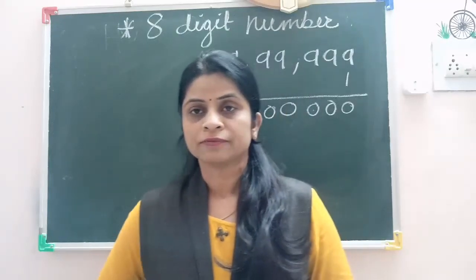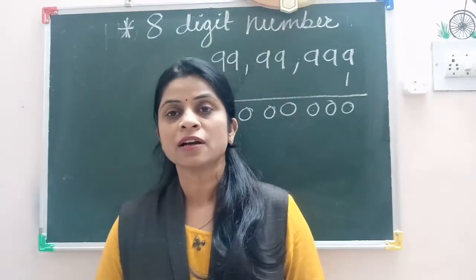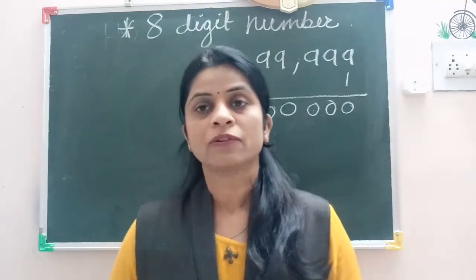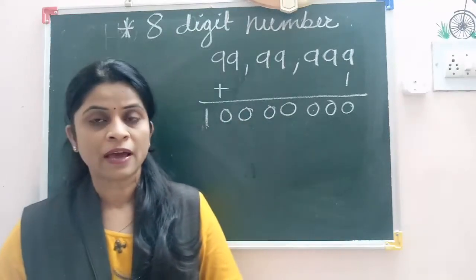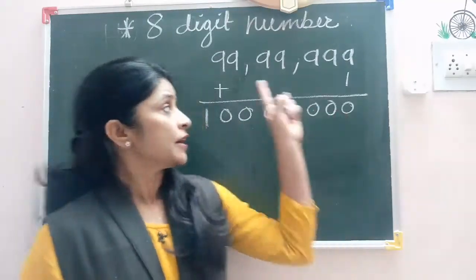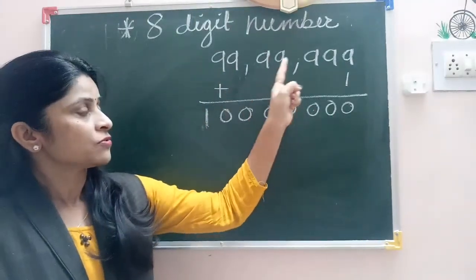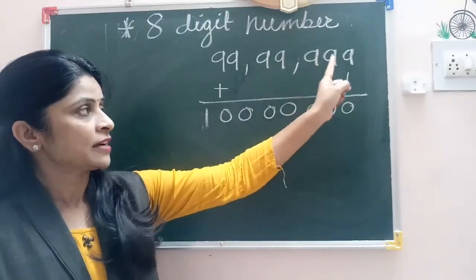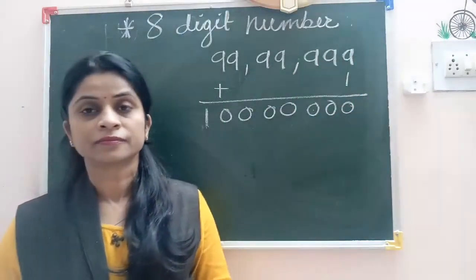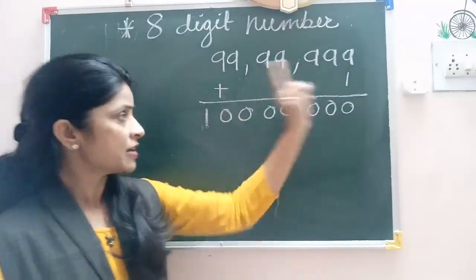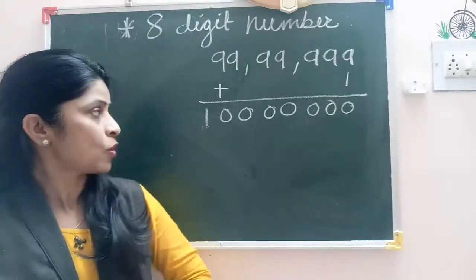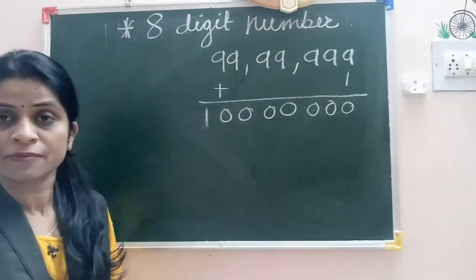Pandya Mathram students, today we will learn about the 8-digit number. You have learned about the 7-digit number. As we know, 99,99,999 is the greatest 7-digit number. When we add 1 to this, we get the smallest 8-digit number.